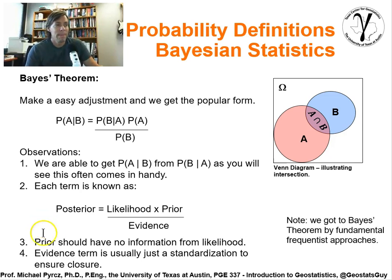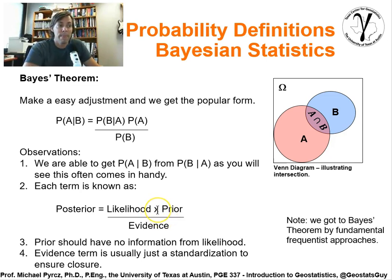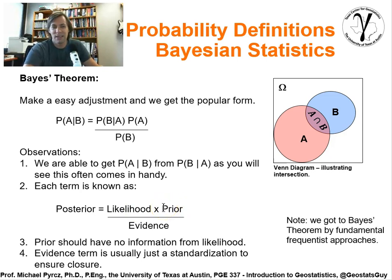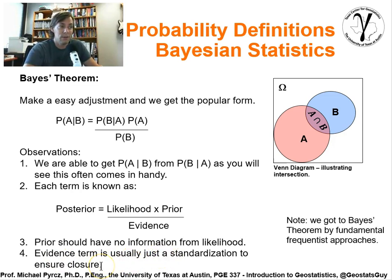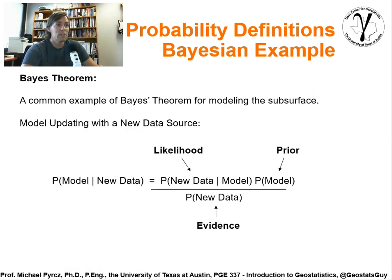We've got to be very careful that the prior should have no information from the likelihood, and vice versa. They should each independently provide pieces of information. Often in practical problems, you'll see that the prior was used to aid with the assessment of the likelihood, or vice versa, and as a result there's effectively a double-dipping — we're fooling ourselves into thinking we have more information than we actually do. The other point is that the evidence term is usually just a standardization to ensure closure, so that all the probabilities sum to one.